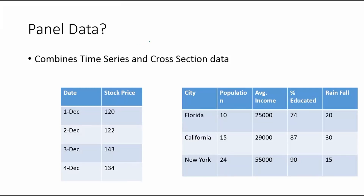Let's first understand what panel data is. You might have heard about time series data and cross-section data. Time series data looks like this: you have the stock price of a particular stock over a continuous period of time — stock price for 1st December, 2nd December, 3rd December, and 4th December. That's time series because it has data for different time periods and the difference between consecutive time periods is constant — just one day.